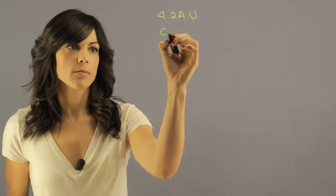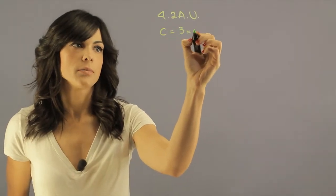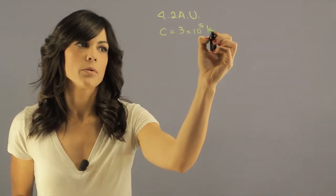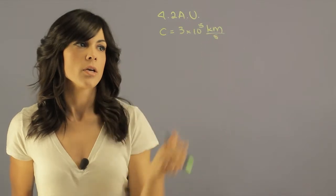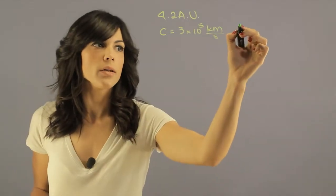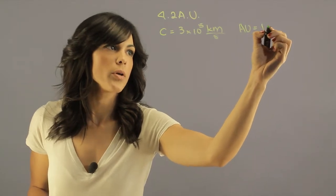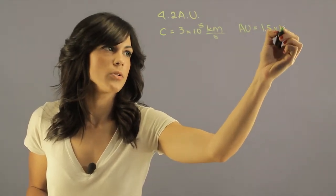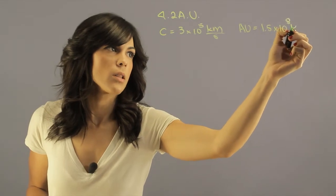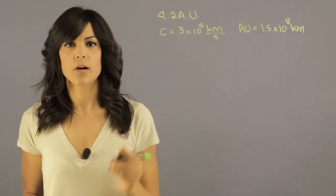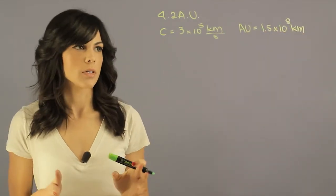So we need the speed of light which is 3 times 10 to the 5th kilometers per second. You also need to know that one astronomical unit is equal to 1.5 times 10 to the 8 kilometers. I'm putting everything in kilometers saves you some time.